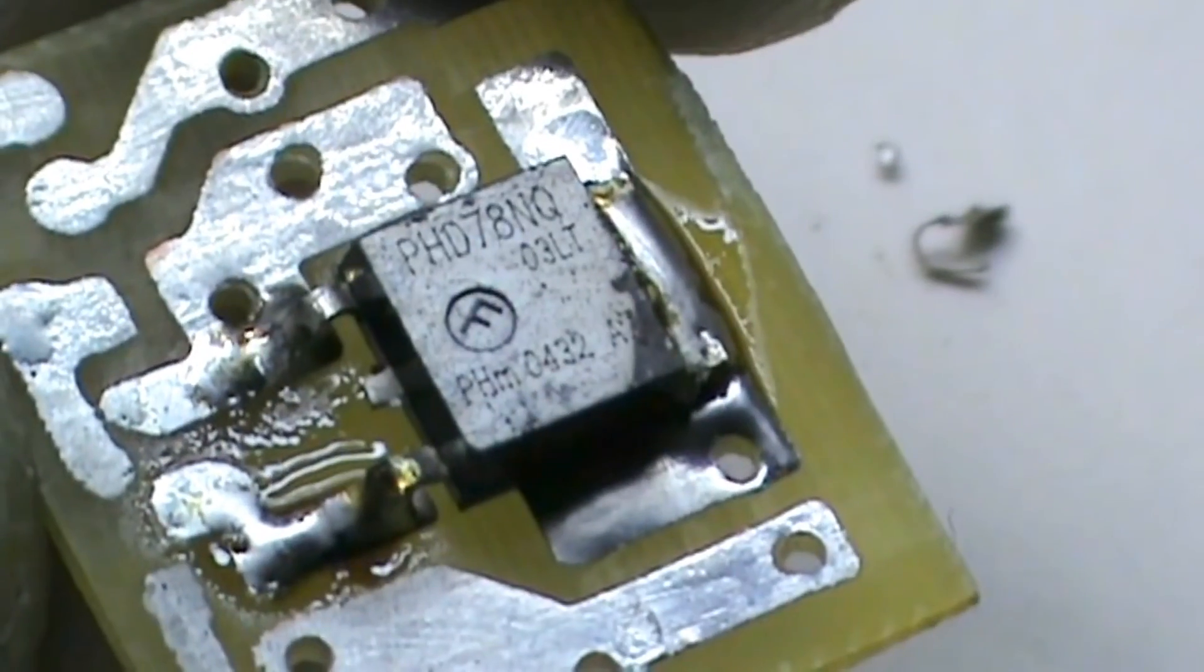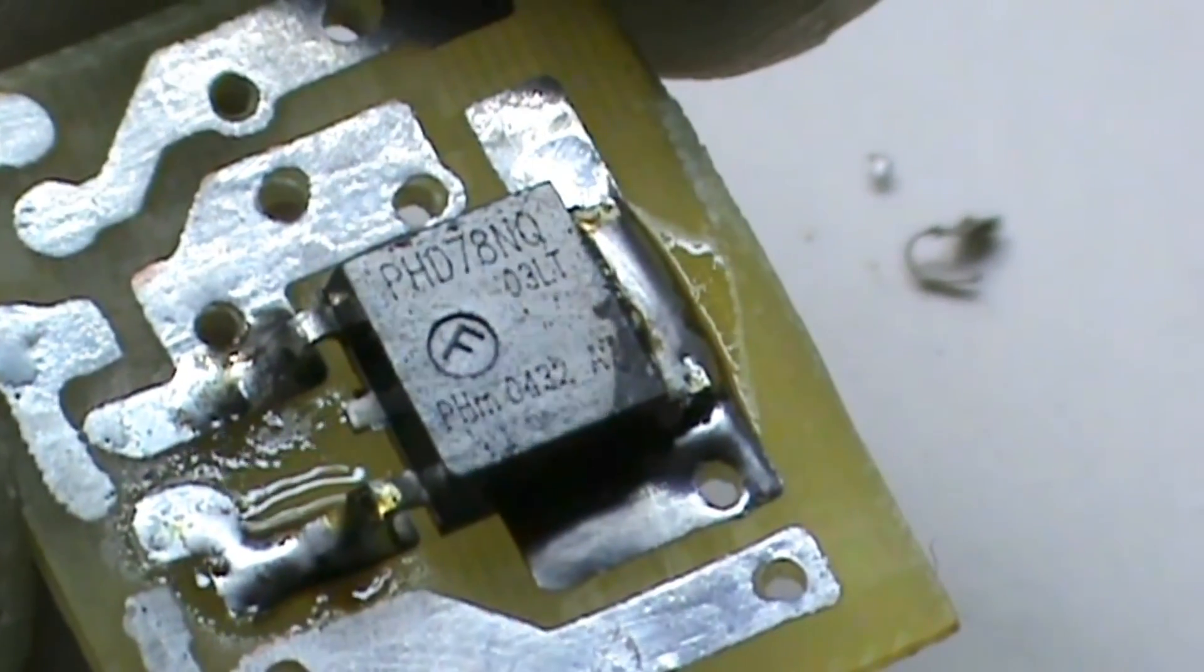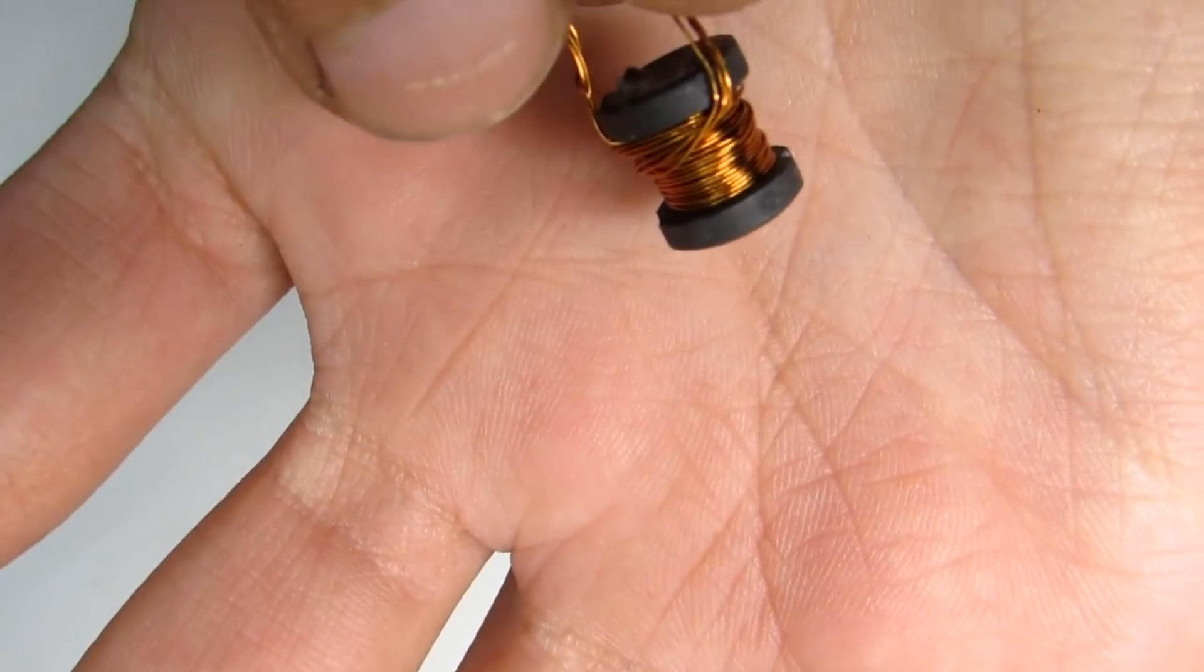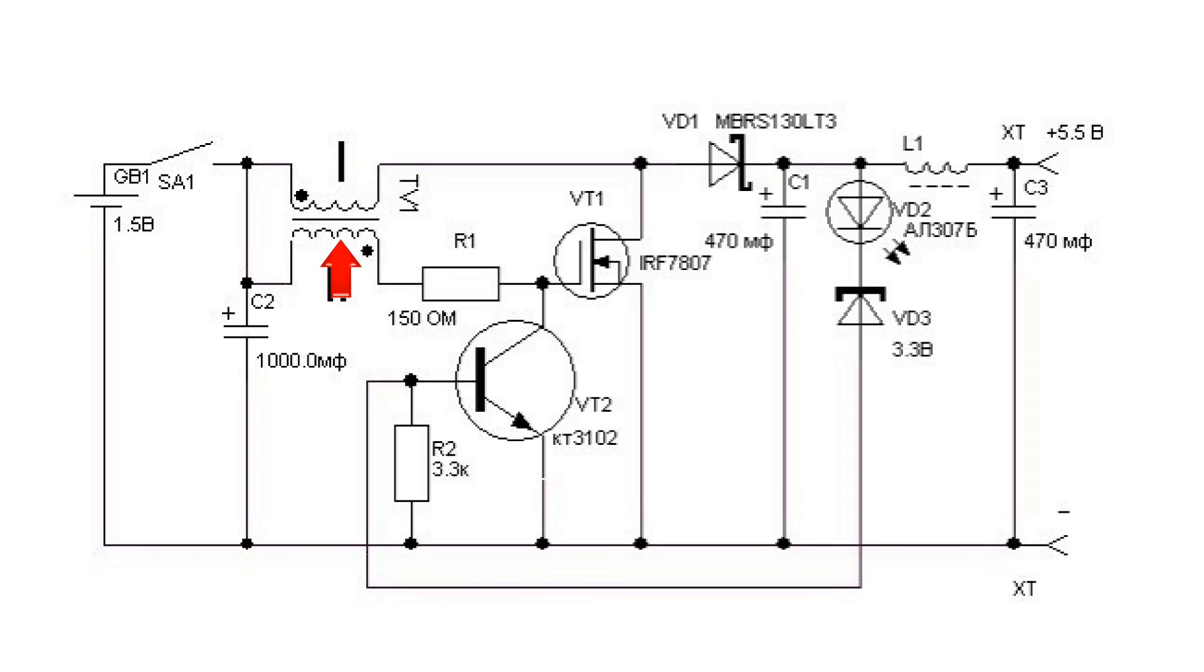Oscillator is made on the basis of the field-effect transistor, although bipolar can be used. The transformer is actually a choke with two windings. The primary coil is power, the secondary is defining. Energy conversion occurs similarly as in any inverter.